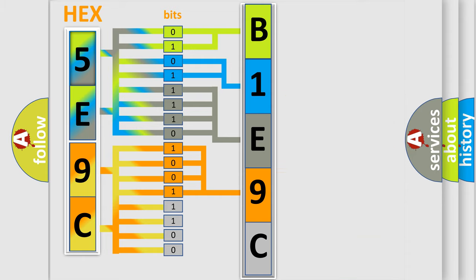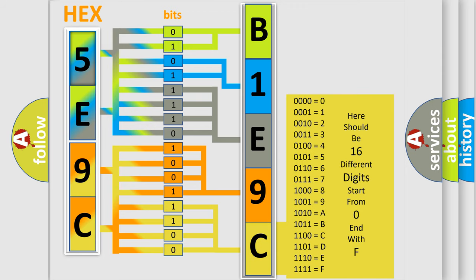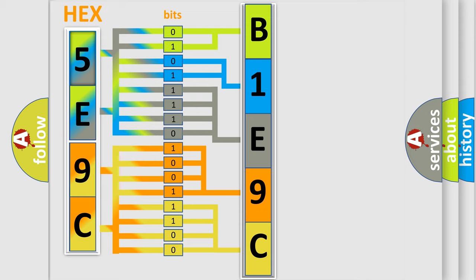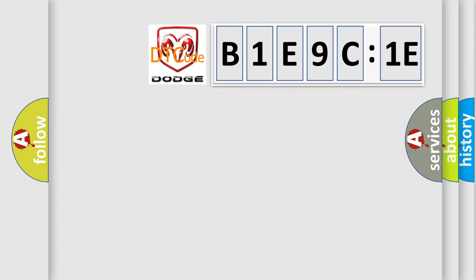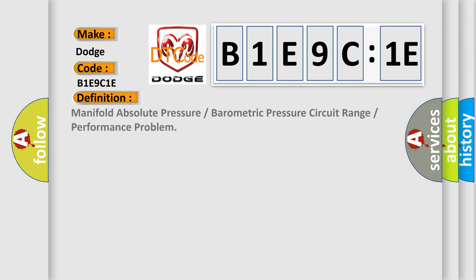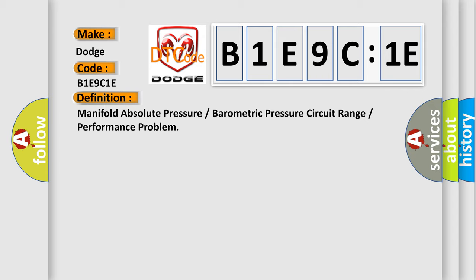A single byte conceals 256 possible combinations. We now know in what way the diagnostic tool translates the received information into a more comprehensible format. The number itself does not make sense to us if we cannot assign information about what it actually expresses. So, what does the diagnostic trouble code B1E9C1E interpret specifically for Dodge car manufacturers? The basic definition is manifold absolute pressure or barometric pressure circuit range or performance problem. And now this is a short description of this DTC code.